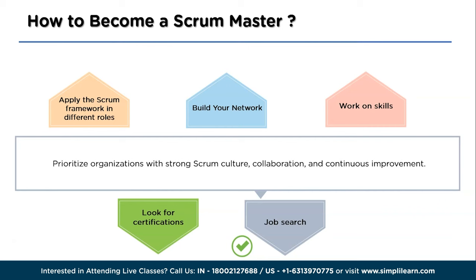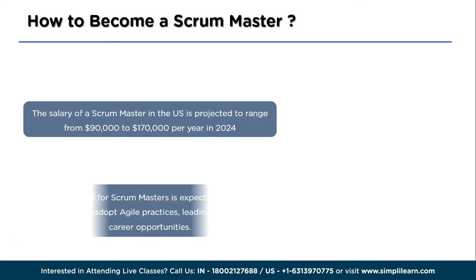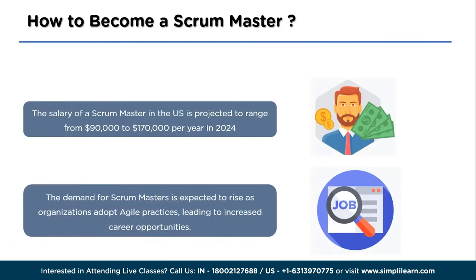Now let's talk about scrum master salary and career. In 2024, the salary of a scrum master in the US is expected to range between $90,000 and $170,000 per year, varying based on experience and expertise. In terms of career prospects, demand for scrum masters is expected to increase as more organizations adopt agile practices to improve their software development processes.